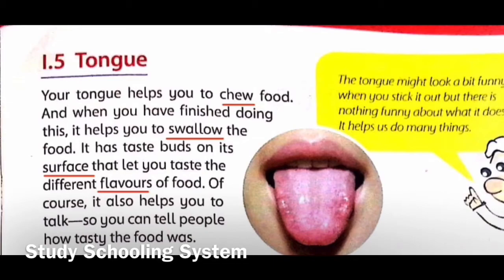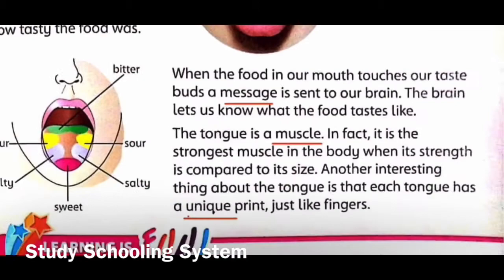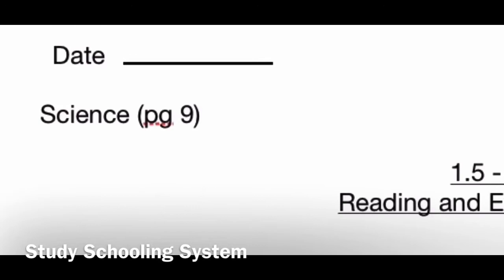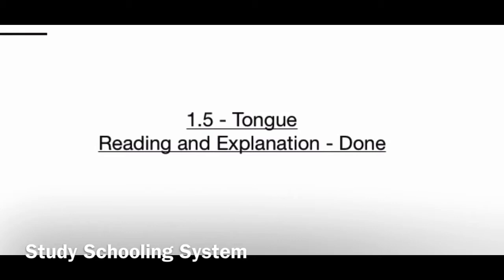The first hard word is chew, then swallow, surface, flavors, message, muscle, unique. These are all your hard words. Now open your notebooks. First, make your title page. Write today's date and day, then underline, write 'Signs page 9', and in the center write '1.5 Tongue' and underline. Reading and explanation done.